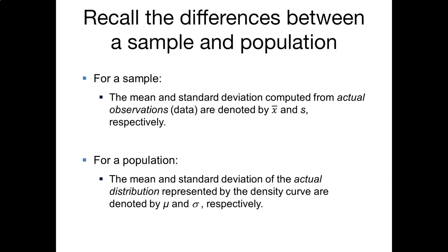Remember the differences between samples and populations. In a sample, we know the mean and standard deviation from actual observations, and we denote these by x-bar and s. For a population, the mean and standard deviation describe the actual distribution, represented by a density curve, and we denote these by mu and sigma respectively. Generally, when we use Greek letters in statistics we're referring to populations; when we use alphabetic letters like x and s, we're talking about samples.